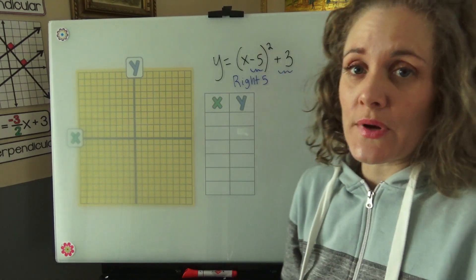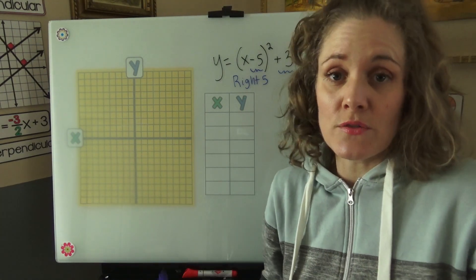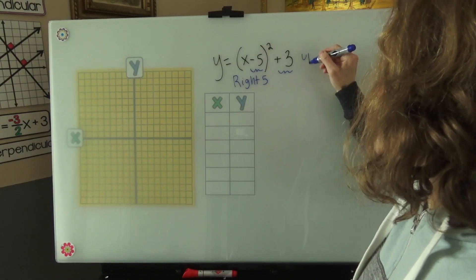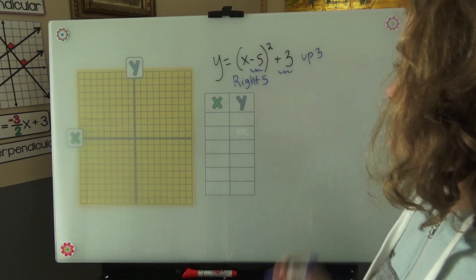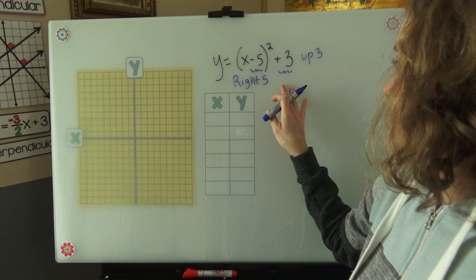Now outside the parentheses, plus 3 is just plus 3, so I'm just going to write up 3, because that's what we had to expect. So our vertex is 5, 3.